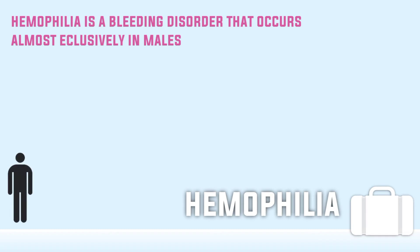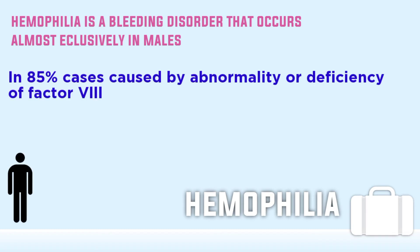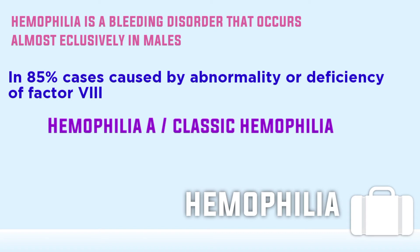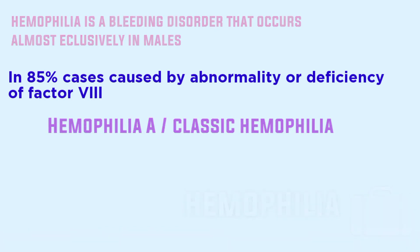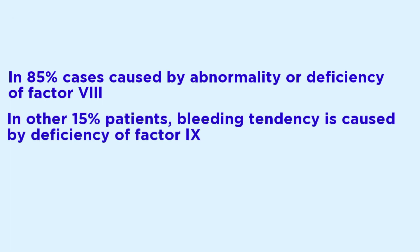Now let's move towards hemophilia. Hemophilia is a bleeding disorder that occurs almost exclusively in males. In 85 percent of cases it is caused by an abnormality or deficiency of factor 8 — this type is called hemophilia A or classic hemophilia. In the other 15 percent of patients, the bleeding tendency is caused by deficiency of factor 9.